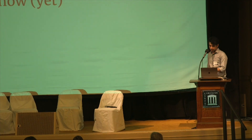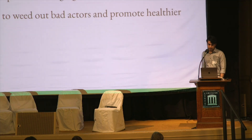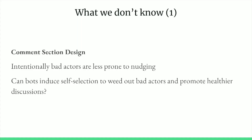I'll end with a couple of things we still don't know. Extending the day's discussion about how design can impact user behavior and nudge pro-social behavior — there will always be some bad actors. One question I wanted to raise: how can we use bots to induce more self-selection to weed out bad actors and promote healthier discussions? I discussed a similar intervention for appeals, but there's an opportunity to explore whether similar interventions would work in more open spaces like comment sections.